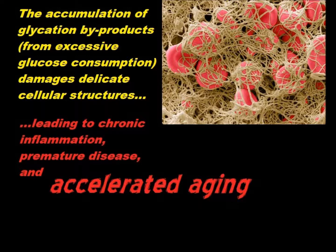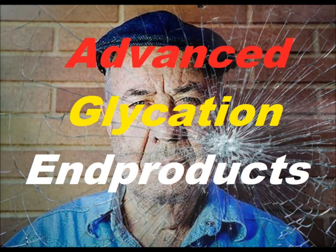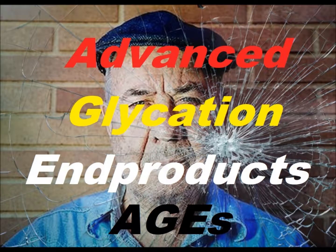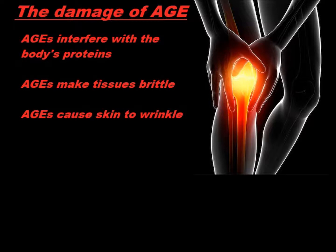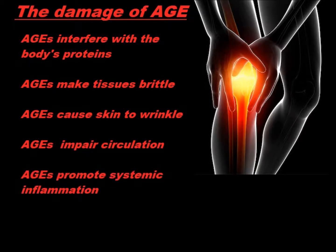These harmful byproducts are often known as advanced glycation end products, or AGEs, and yes, they do indeed accelerate aging in a number of ways. This includes interfering with the normal function of our body's proteins, cross-linking proteins to cause tissue stiffening, skin wrinkling, and impaired heart and blood vessel function, inducing chronic inflammatory reactions, and making cells more susceptible to oxidative damage.